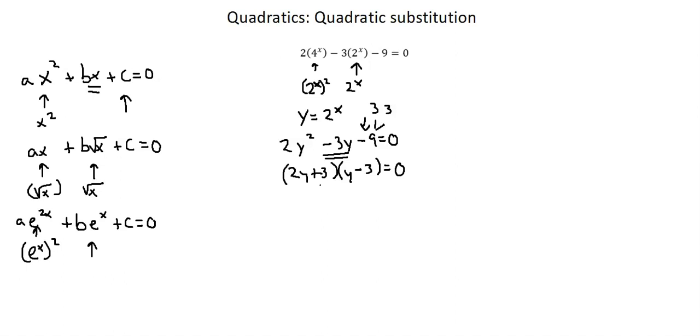And now, if I were to go backwards and multiply 3 times y, I'd have positive 3y. 2y times negative 3, I'd have negative 6y. Those combine to negative 3y. That's the term in the middle of the left side of my equation. 2y times y would give me my y squared, and 3 times negative 3 would give me my negative 9.